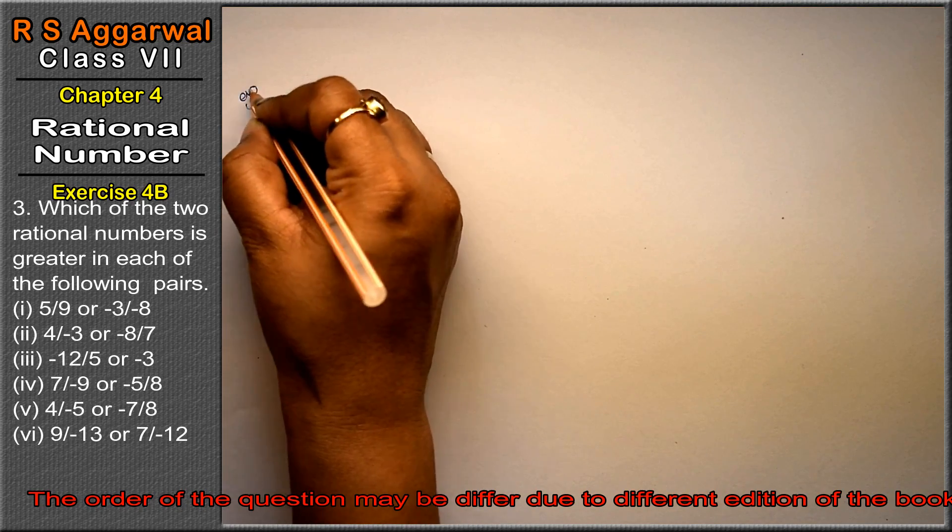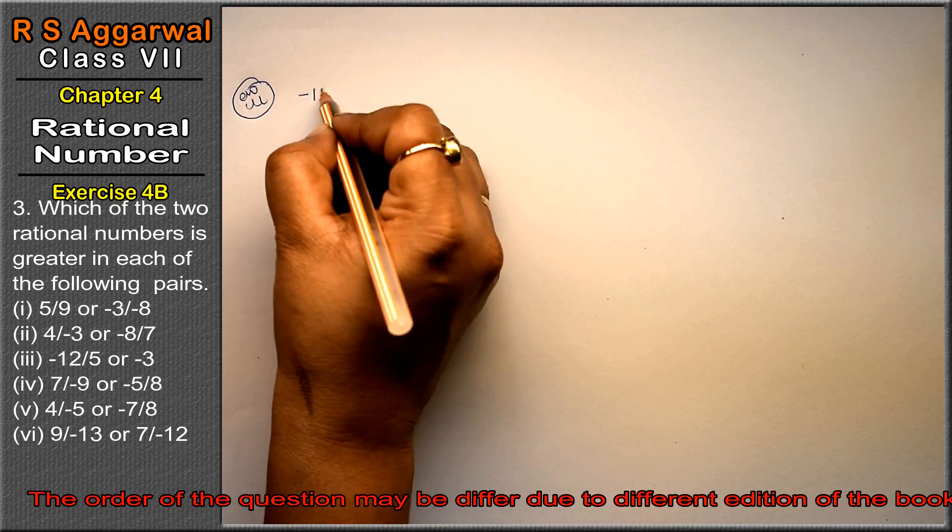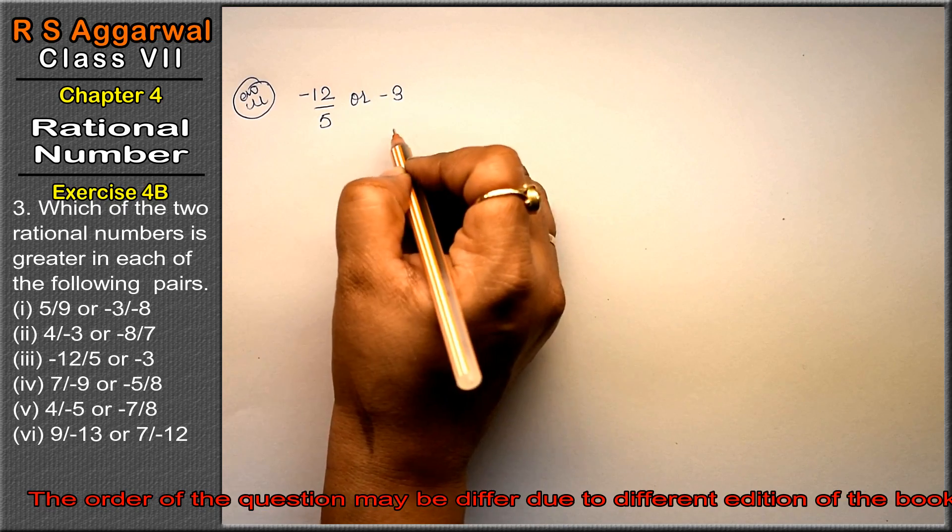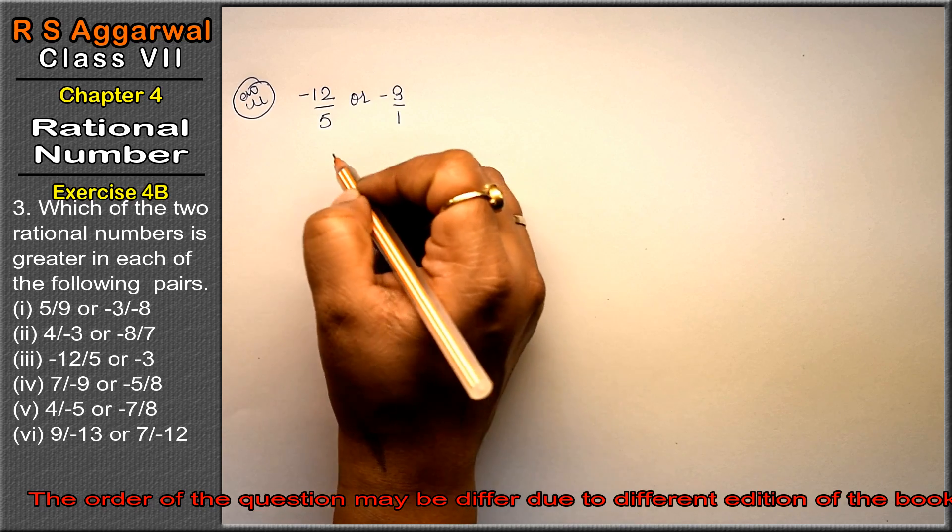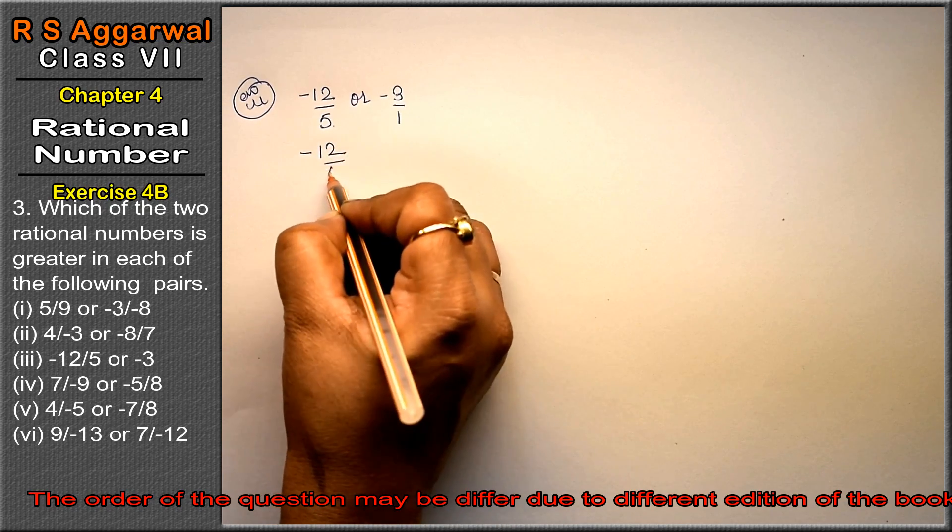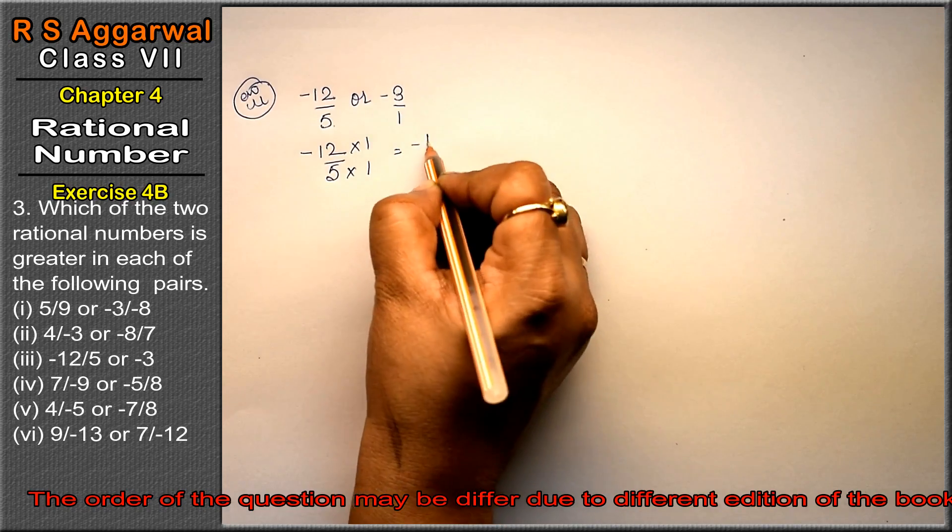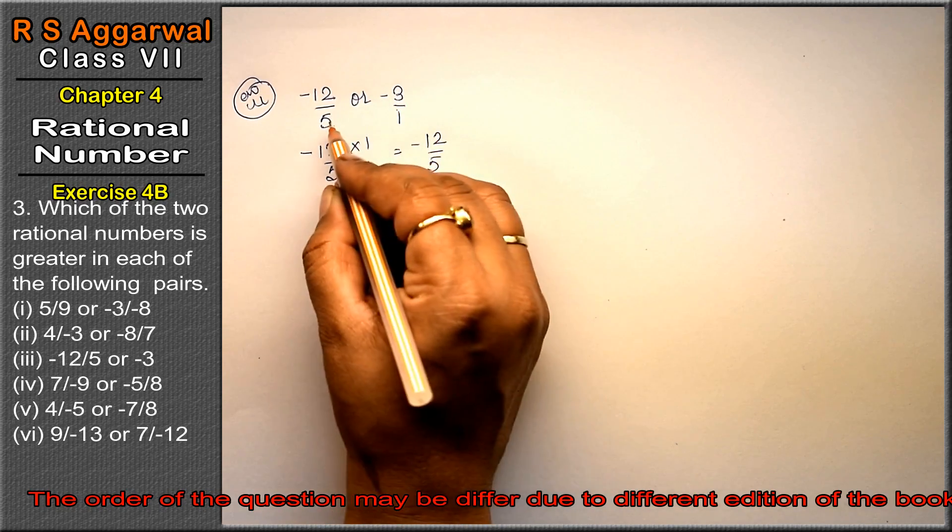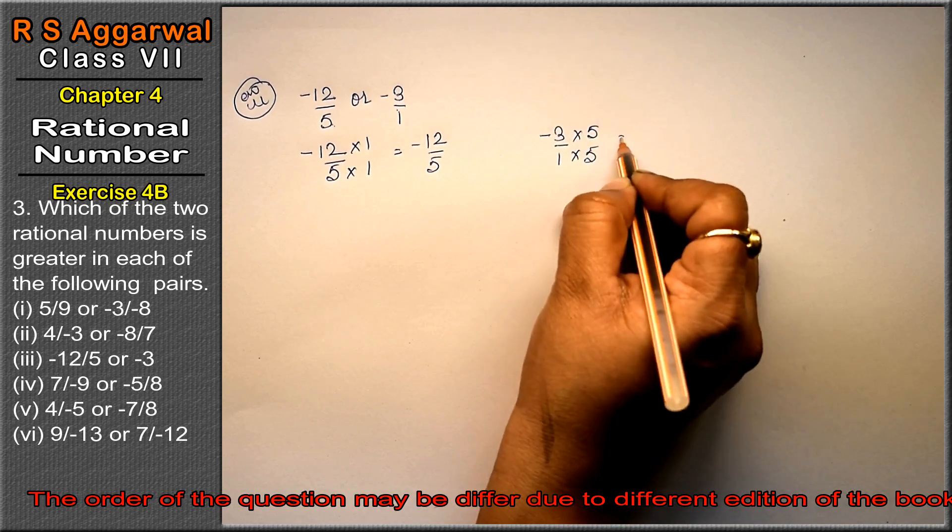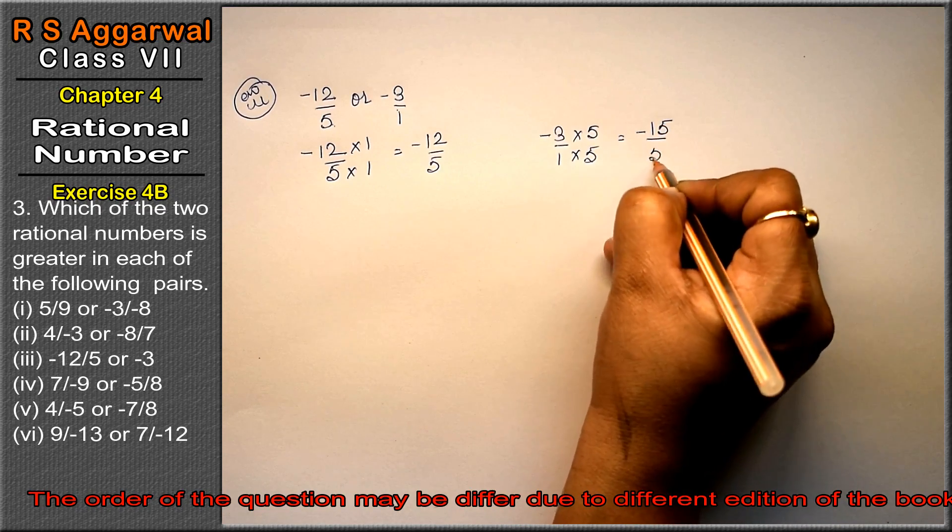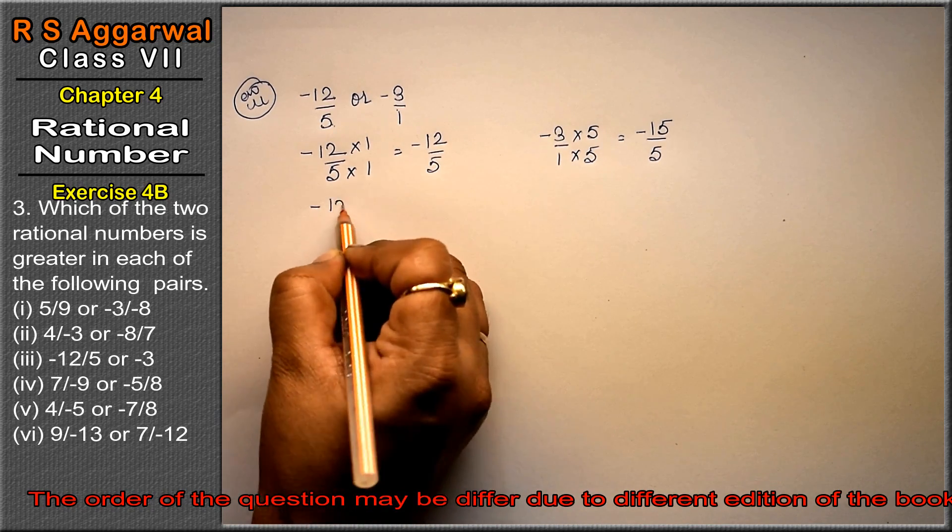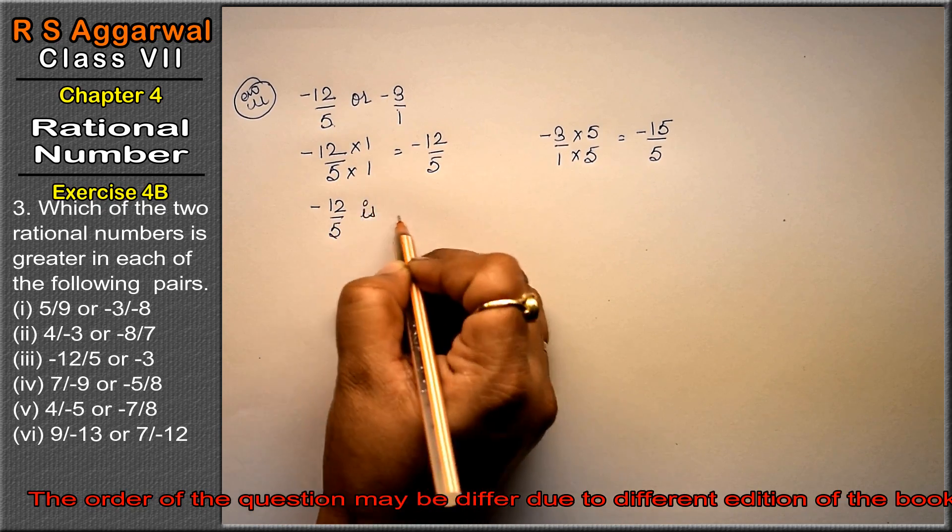Third part is -12/5 or -3. We can write -3 as -3/1. Multiply -12/5 by 1 to get -12/5, and multiply -3/1 by 5 to get -15/5. In negative numbers, the smaller absolute value is greater, so -12/5 is greater.